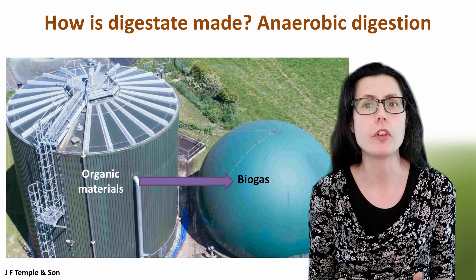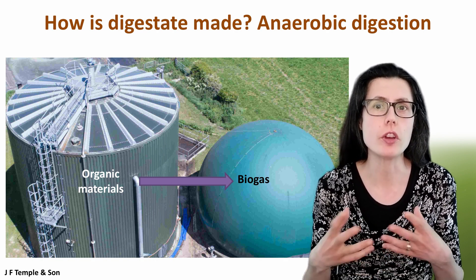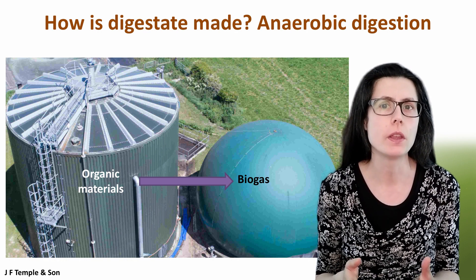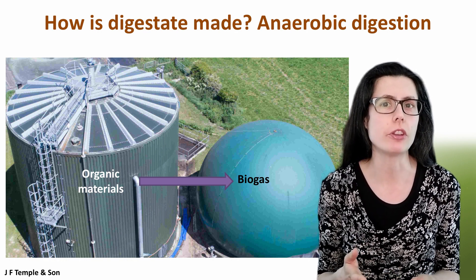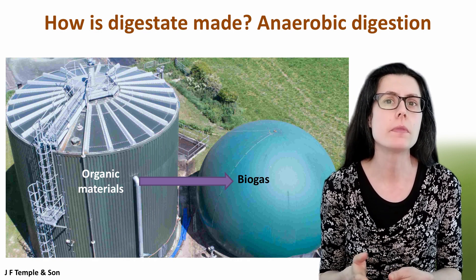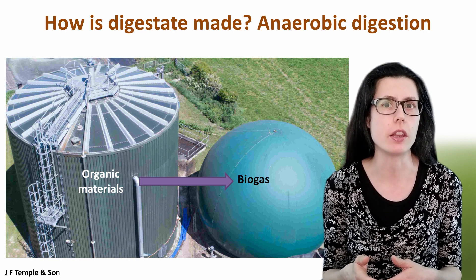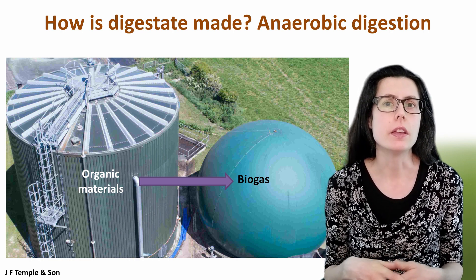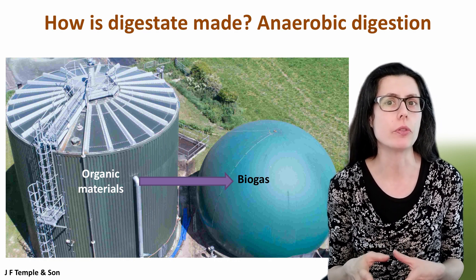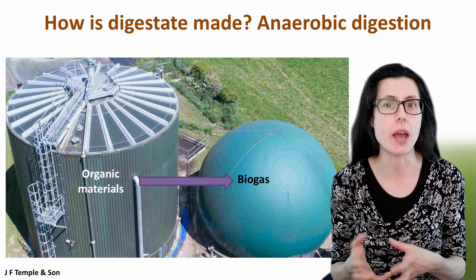How is digestate made? Organic materials are converted to biogas via the anaerobic digestion process. A photo of an anaerobic digestion plant, often abbreviated to AD, is shown here. There are at least 580 AD sites in the UK alone — this is for 2020. The AD process itself involves the breakdown of organic materials via microorganisms without oxygen, hence the term anaerobic.